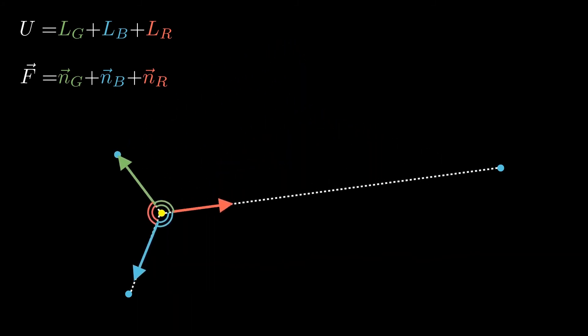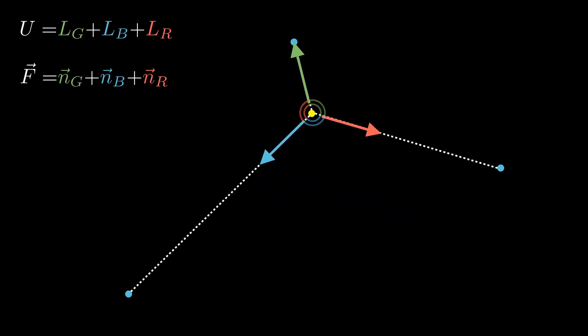Conversely, we can check that keeping the angles at 120 degrees makes the total force zero, which means that the distance is indeed minimized.